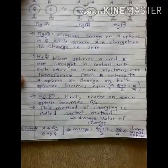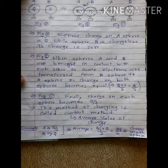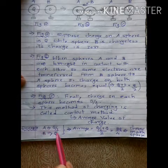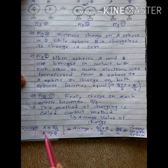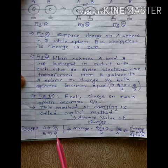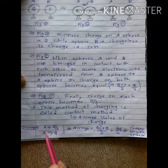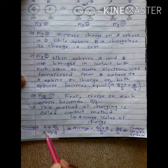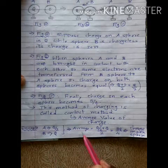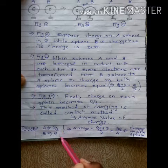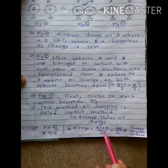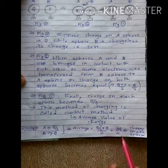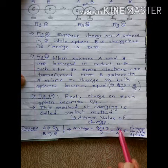Now we will explain a simple example based on the contact method. Suppose sphere A has charge Q/2 and sphere B has charge Q. When A and B are brought into contact, we find the average: (Q/2 + Q) / 2 = (3Q/2) / 2 = 3Q/4. So the final charge on each sphere is 3Q/4.